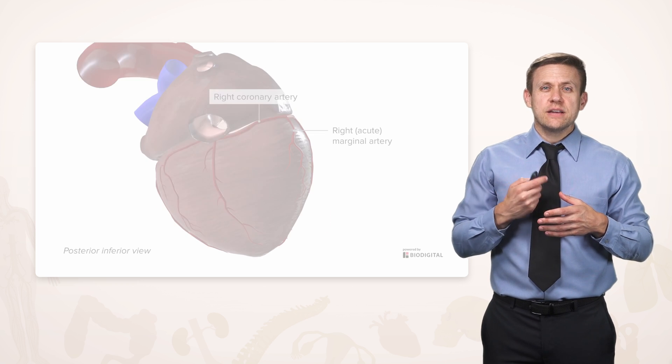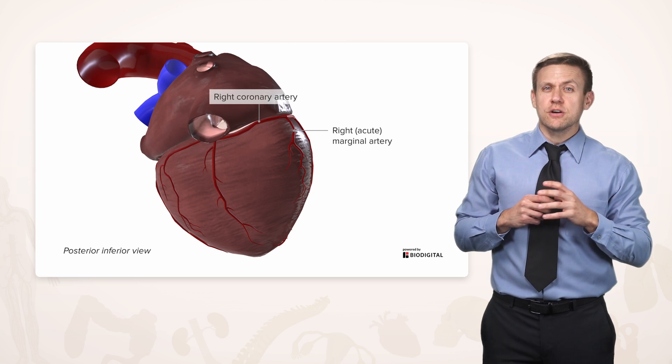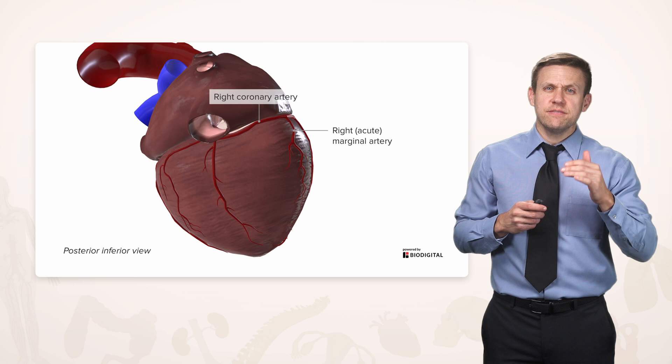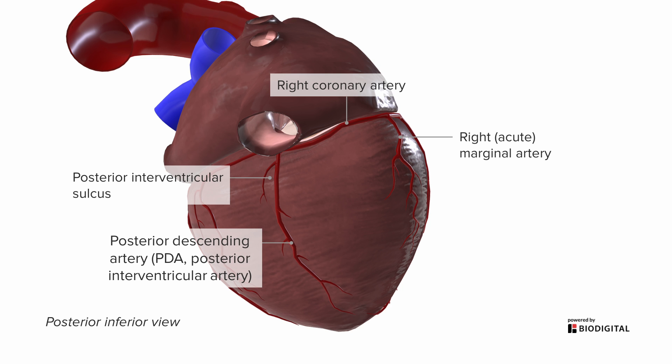If we swing around to the posterior slash inferior side, we see again that right or acute marginal artery on the edge there. The right coronary artery continues along that groove between atrium and ventricle until it reaches that groove we talked about called the posterior interventricular sulcus that represents the groove in between the atria. There it usually forms the posterior descending artery or PDA, also known as the posterior interventricular artery because of its location. It's going to go along that groove along the inferior portion of that septum all the way out to the apex.